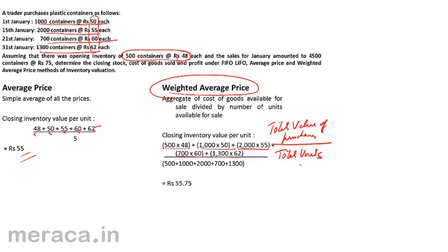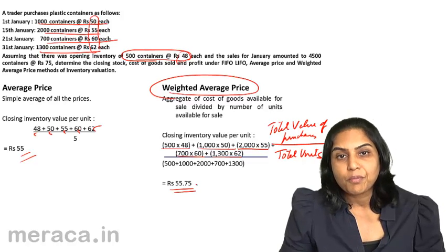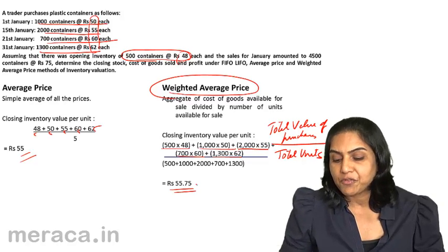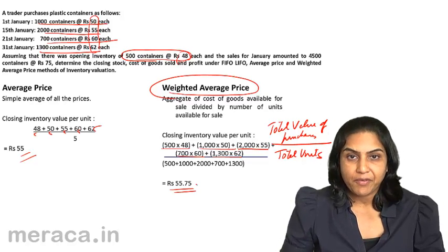This gives us a weighted average price. In this instance, it is 55.75. The inventory would be valued at 55.75 and all issues during that period would also be valued at 55.75.